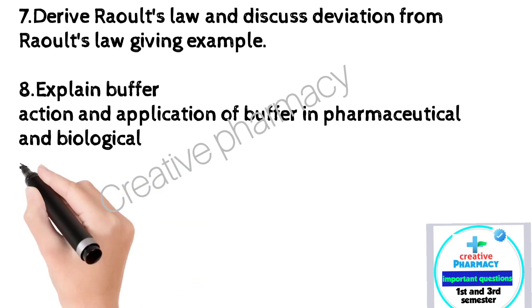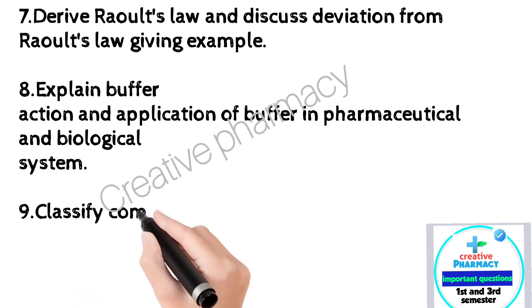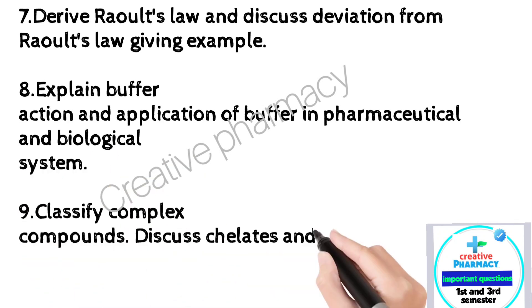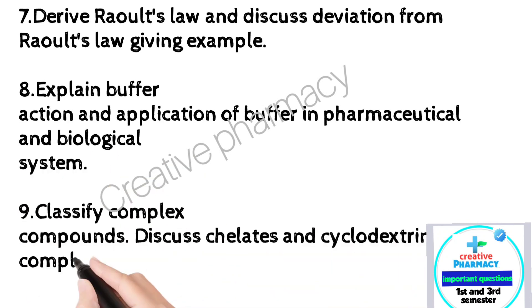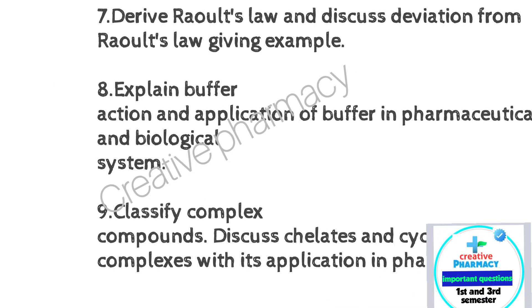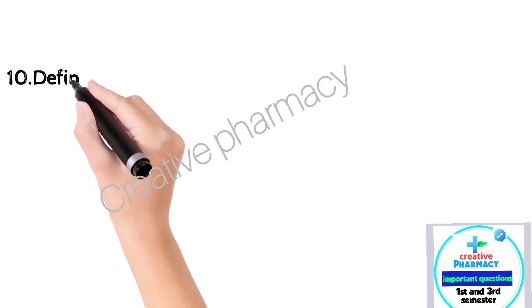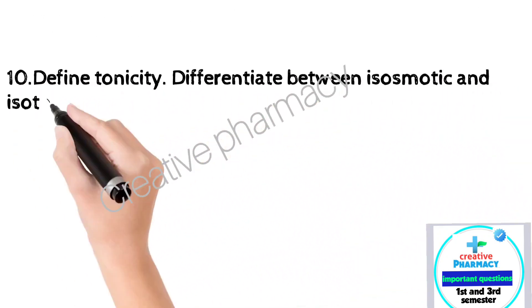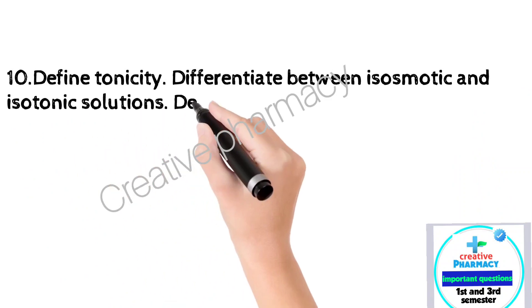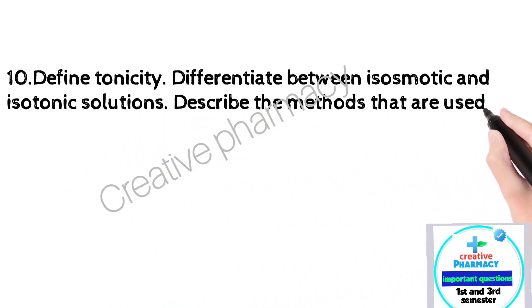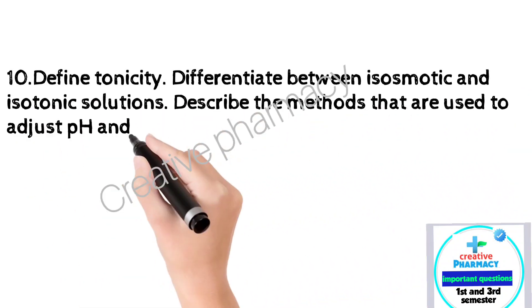Question 9: Classify complex compounds. Question 10: Discuss chelates and cyclodextrin complexes with its application in pharmacy. Define tonicity. Differentiate between iso-osmotic and isotonic solutions. Describe the methods that are used to adjust foreign tonicity.